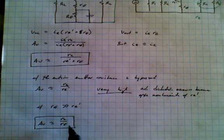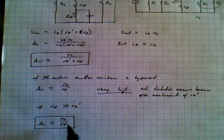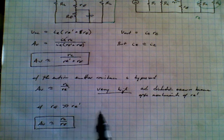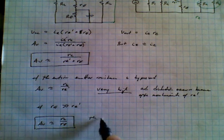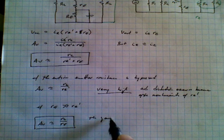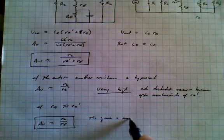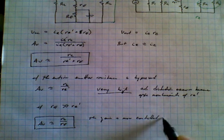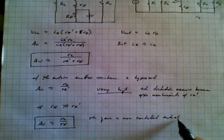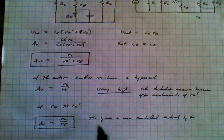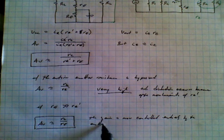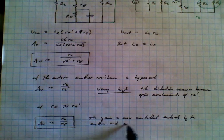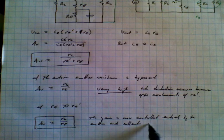And this is often the case. Notice that the gain now is now controlled entirely by the emitter and collector resistors.